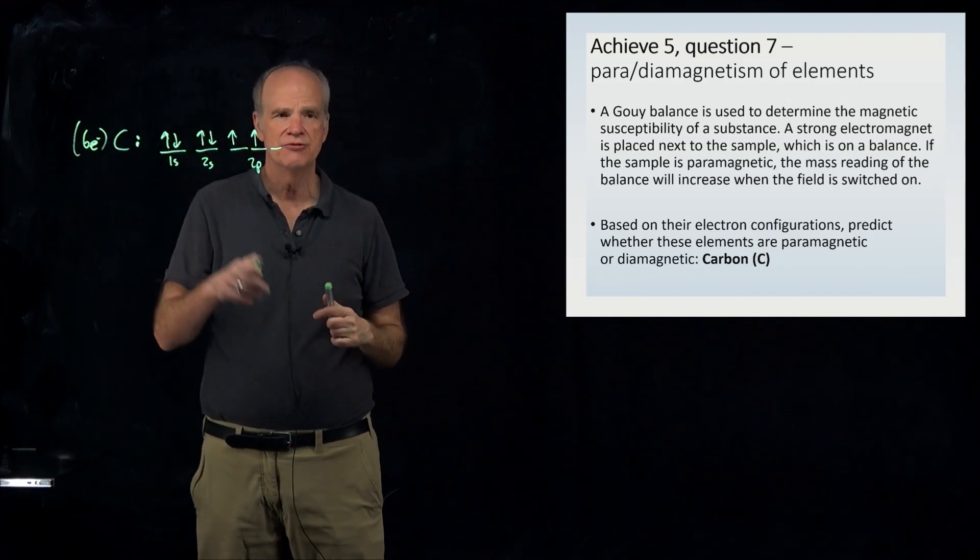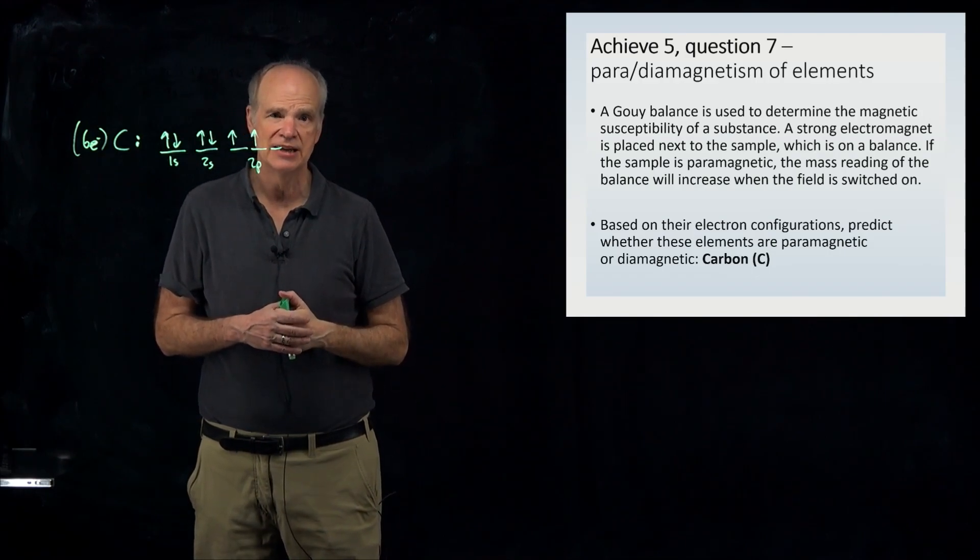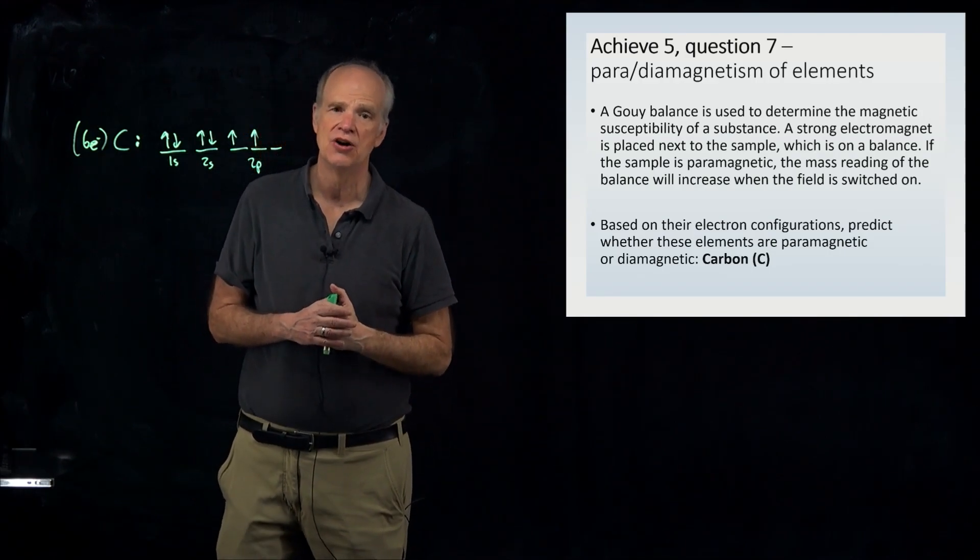So you have to figure out from this notation whether the neutral carbon atom is diamagnetic or paramagnetic. And so you have to recall the definitions.